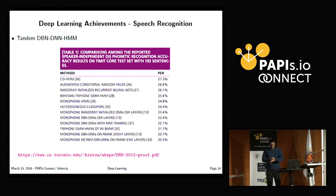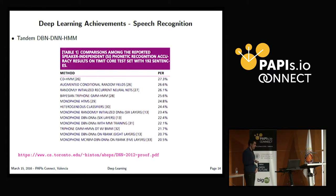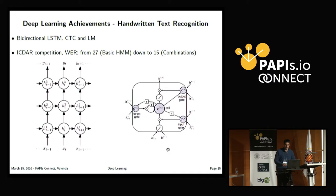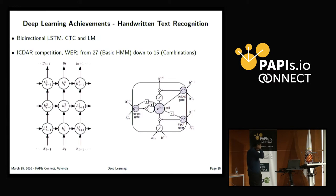Deep learning has also been applied to speech recognition with remarkable results. It started using a tandem representation combining deep belief networks and deep neural networks with hidden Markov models, reducing error rates significantly compared to standard hidden Markov models. Also, recurrent neural networks — specifically the famous long short-term memory networks — have been applied to natural language processing and handwritten text recognition.